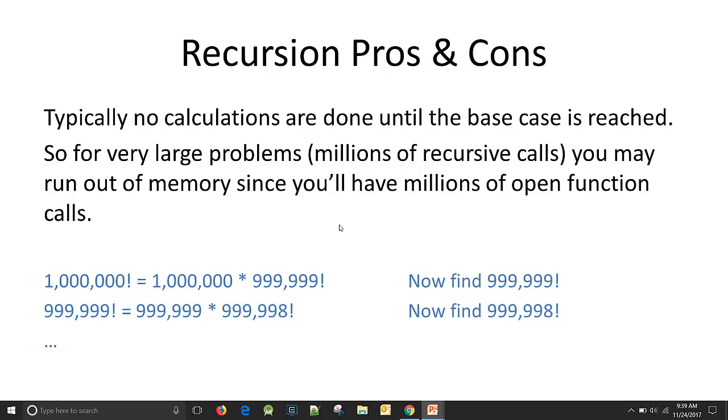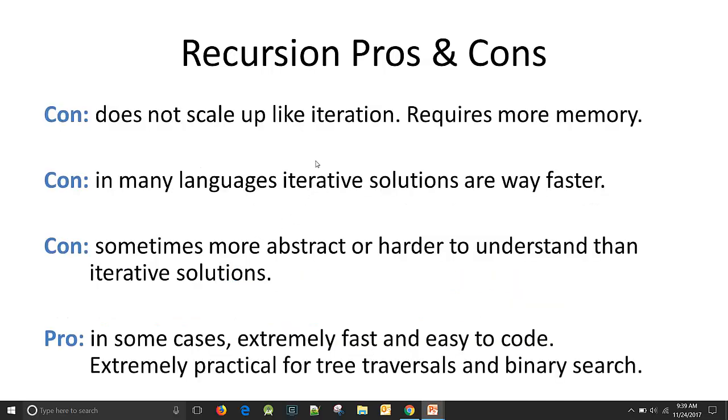So recursion pros and cons. Typically, no calculations are done in a recursive solution until you reach that base case. And until then, you're opening up a whole bunch of recursive function calls, which can take up some memory. So if you have millions of pieces of data in your data set, you're opening a lot of function calls. And you could run out of memory that way. So that's one of the cons. So it does not really scale up like iteration does. It requires more memory. So in some very large problems, recursion may not be a good solution.